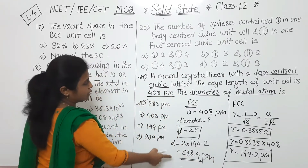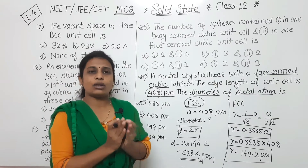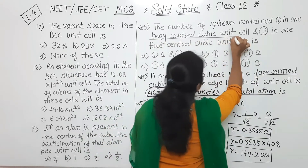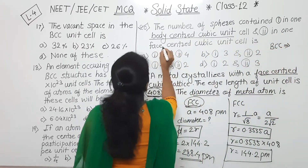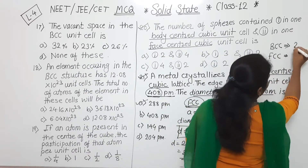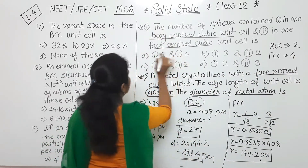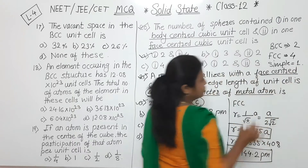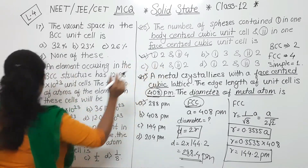The number of atoms in one body-centered cubic unit cell depends on which cubic structure the question refers to. Based on that we take the answer. So here we have to solve two more MCQs.